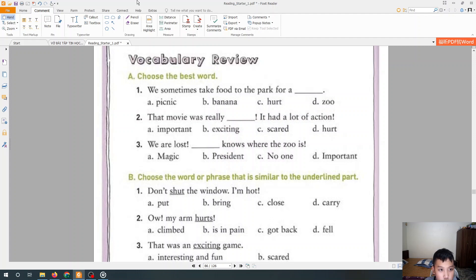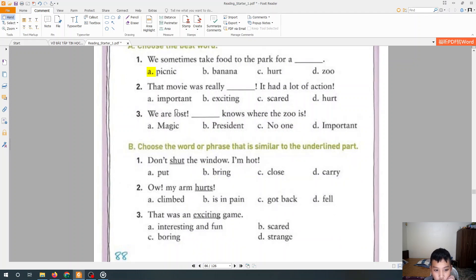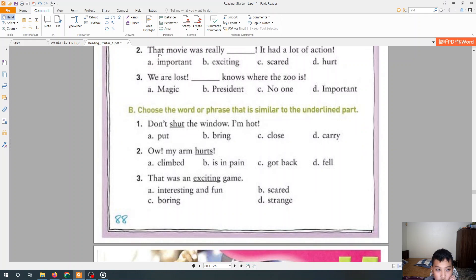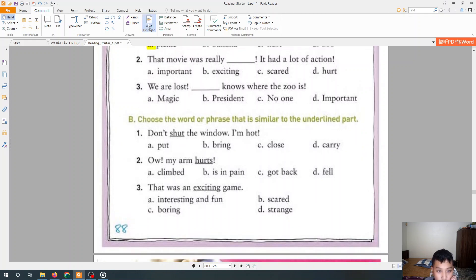In part A, we choose the best word. Let's learn. First sentence. We sometimes take food to the park for picnic. Sometimes. I do this too. In the weekends or in the day I don't have any work, I will sometimes take food to the park for picnic, everyone.